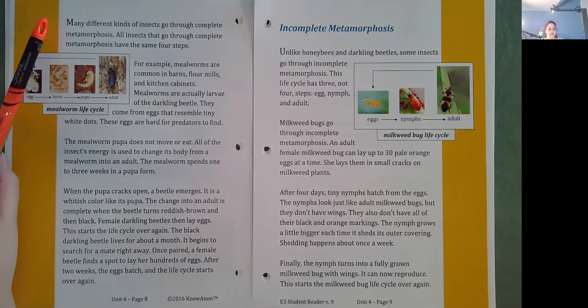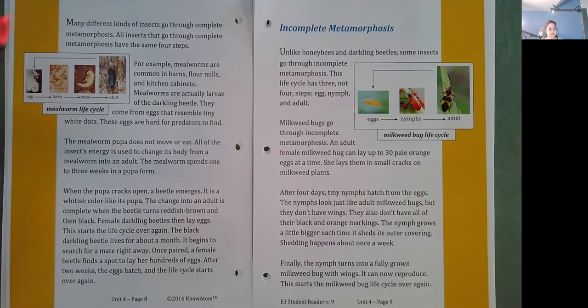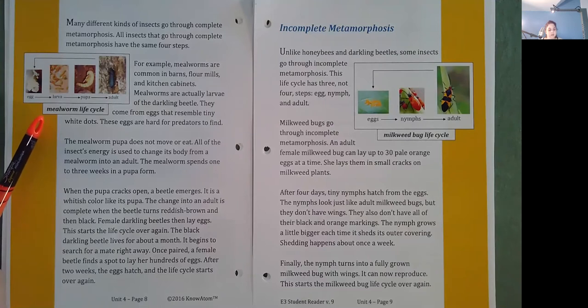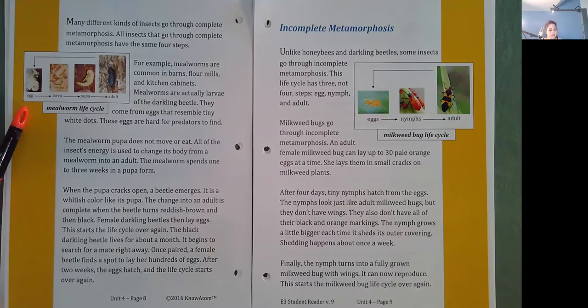Many different kinds of insects go through complete metamorphosis. All insects that go through complete metamorphosis have the same four steps. For example, mealworms are common in barns, flour mills, and kitchen cabinets. Mealworms are actually larvae of the darkling beetle. They come from eggs that resemble tiny white dots. These eggs are hard for predators to find.